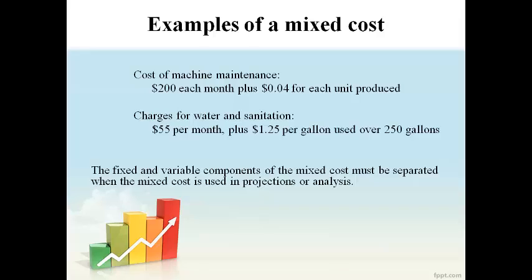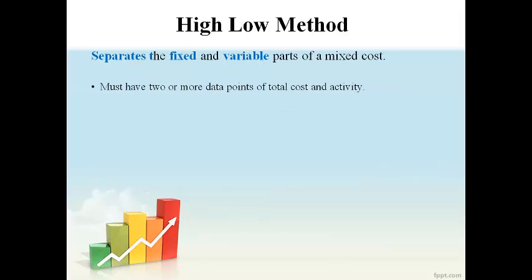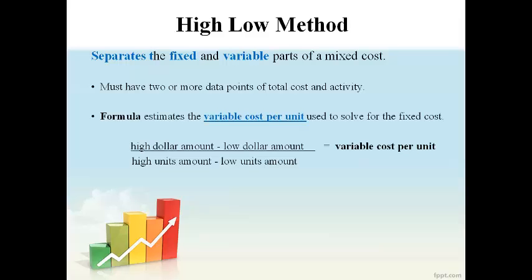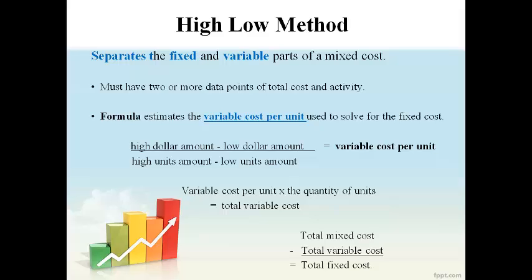Fixed costs and variable costs must be separated in order to do analysis. The high-low method is used to separate the fixed and variable parts of a mixed cost. Two data points are required to separate out the fixed and variable cost. The formula of dollars divided by units gives the variable cost per unit. The variable cost per unit is then used to estimate the total variable cost. The total mixed cost less the total variable cost equals the amount of fixed cost in the mixed cost. Total variable cost will change and total fixed cost will not change when the quantity changes.